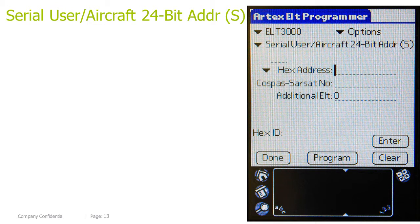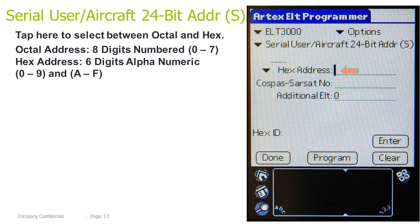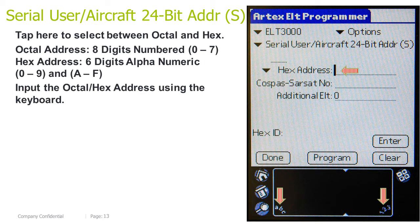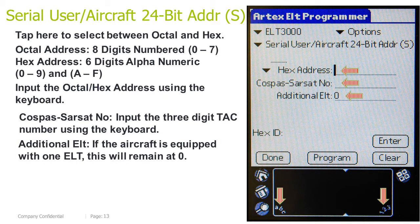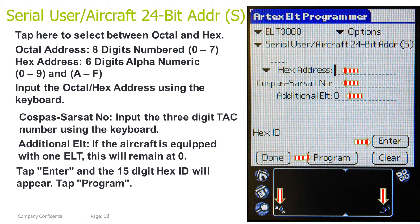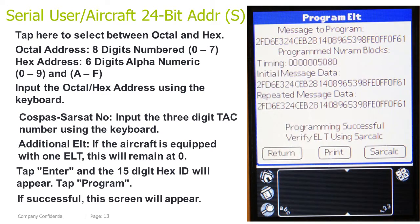Serial user aircraft 24-bit address short: tap here to select octal or hex. Octal address is 8 digits, numbered 0 through 7. Hex address is 6 digits, alphanumeric, 0 through 9 and A through F. Input the octal/hex address using the keyboard. COSPAS-SARSAT number: input the 3-digit TAC number using the keyboard. Additional ELT: if the aircraft is equipped with just one ELT, this will remain at 0. Tap Enter and the 15-digit hex ID will appear. Tap Program. If successful, this screen will appear.